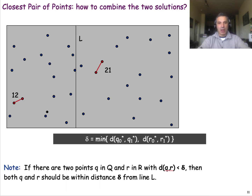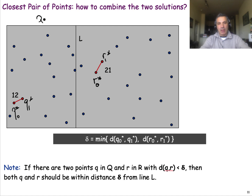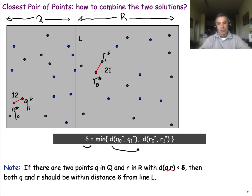So how do we combine two solutions now? For example, these are the two points at the smallest distance in Q with distance 12, and this is the pair at the smallest distance in R. The question is: are there any pairs of points such that one point is in Q and the other is in R, with a distance smaller than the smaller of these two distances? If we define delta as the minimum of these two distances, we are looking for any such cross-pair with distance smaller than delta.